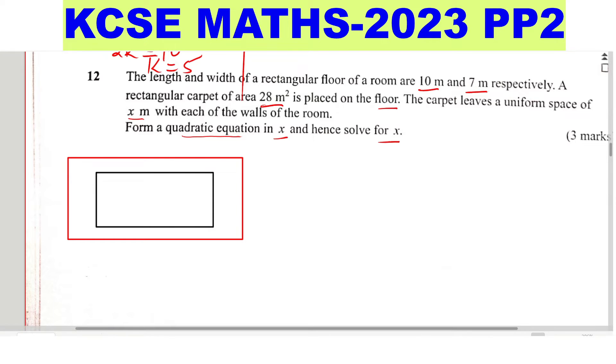It leaves, this is uniform. So this measurement here, it is uniform. It's just a sketch that is uniform. So the uniform space of x meters with each of the walls. So this is uniform. It's just a sketch, it may not look exactly uniform.